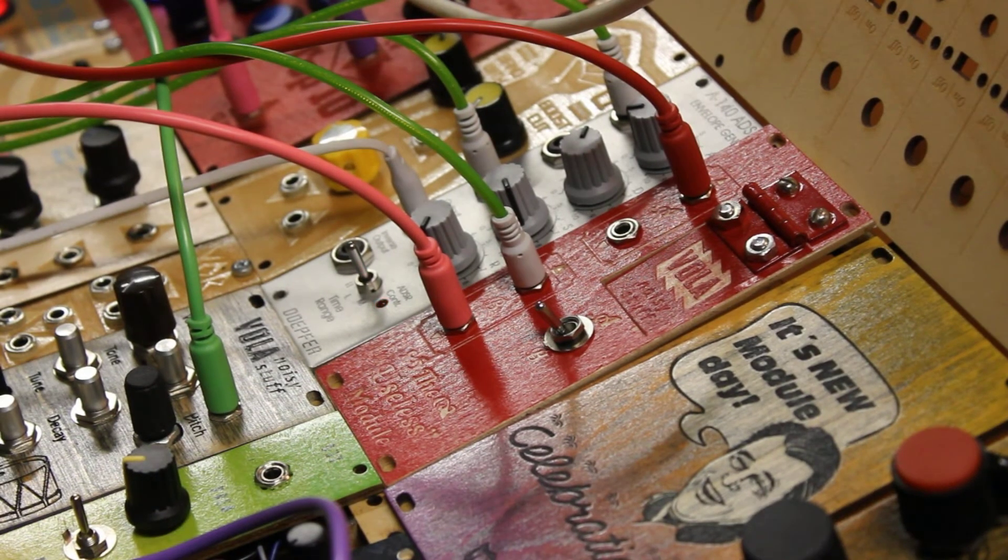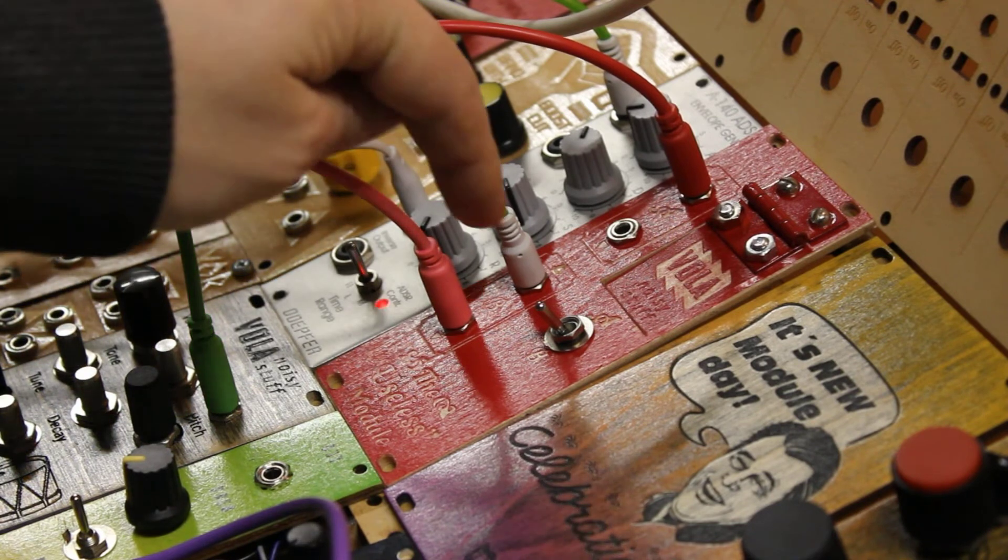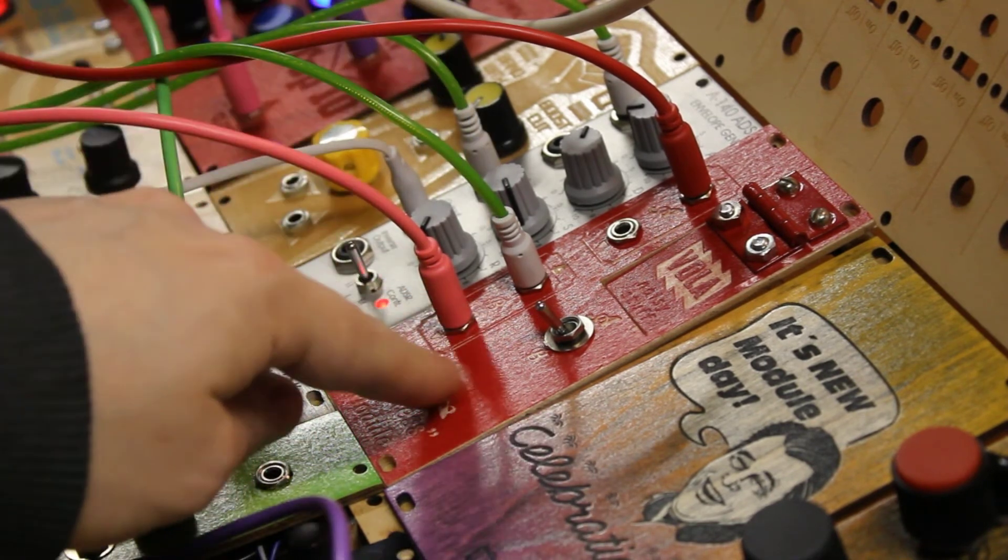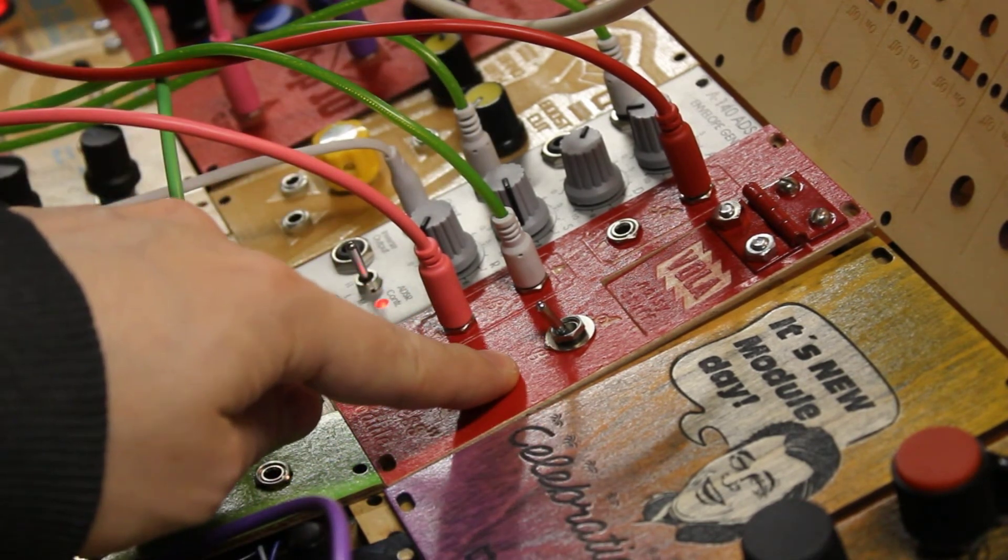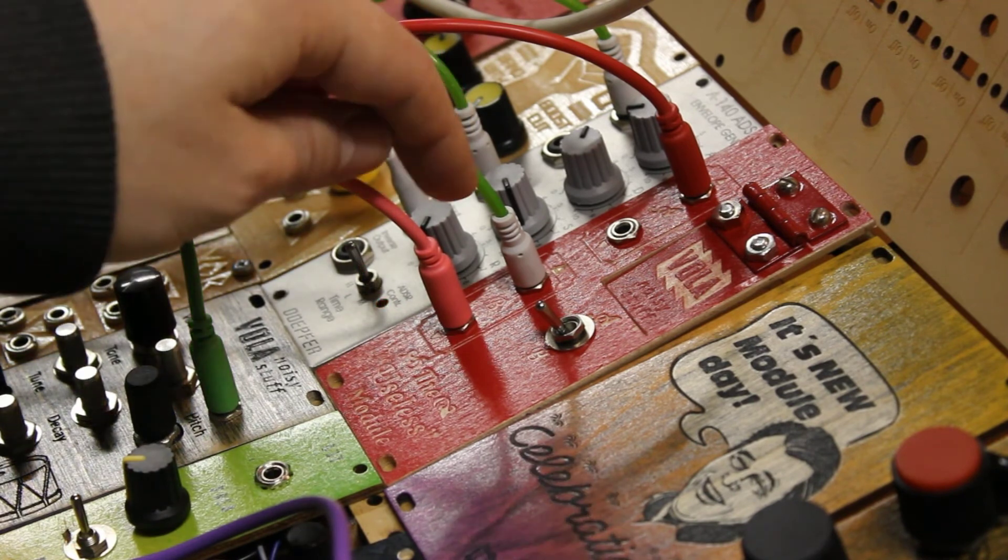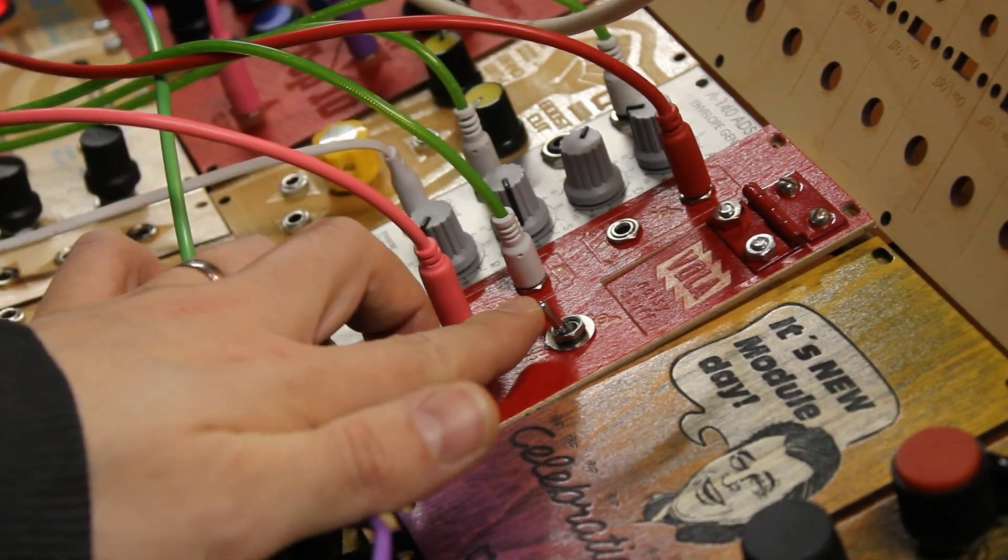Now instead of the sequence going into the B channel and being open when the switches are down position, I have the chord organ going in and the sequence going into the A.